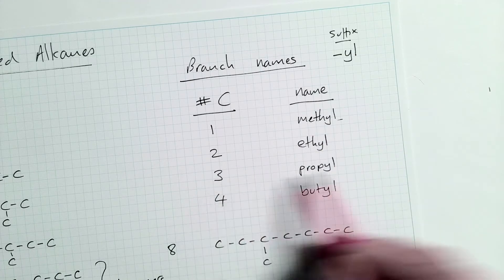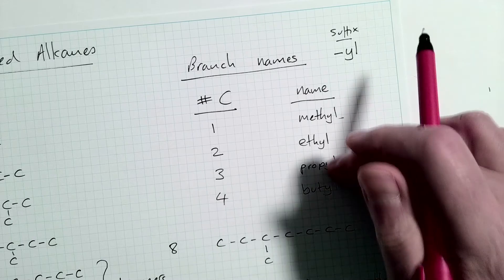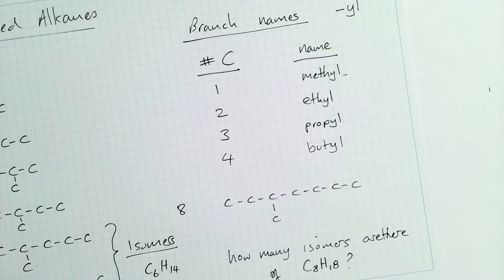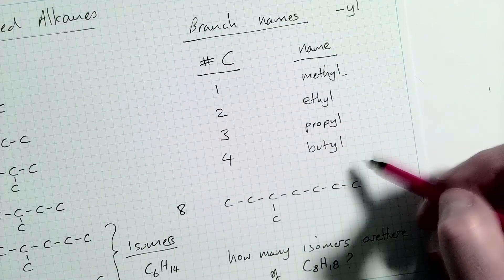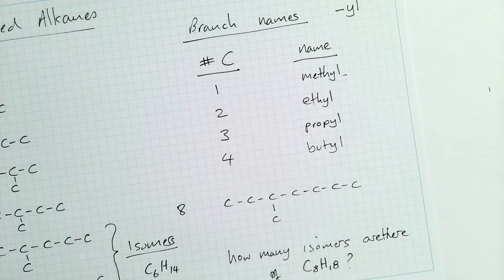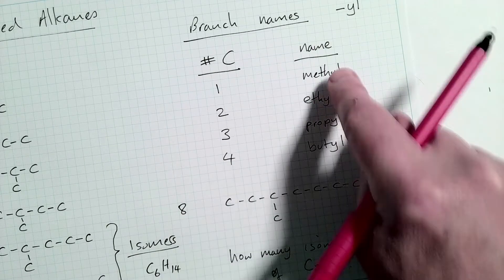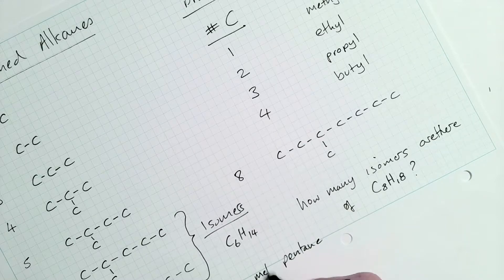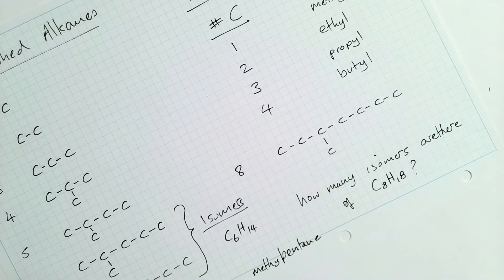Ethyl. If you've got two carbons, propyl, if you've got three carbons, butyl, if you've got four carbons, we're not going to see these things in learning at national five, but you will see them when you do higher chemistry. So one carbon is methyl. So it's going to be methyl pentane.